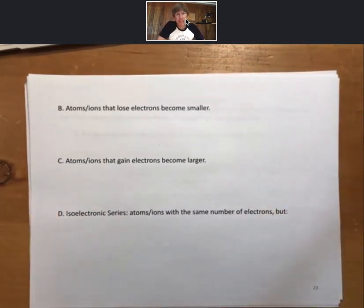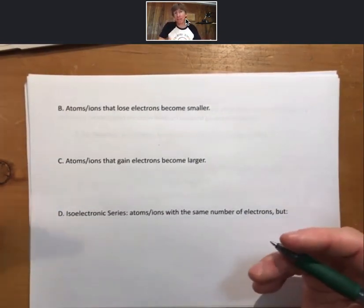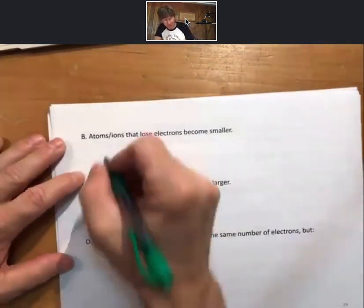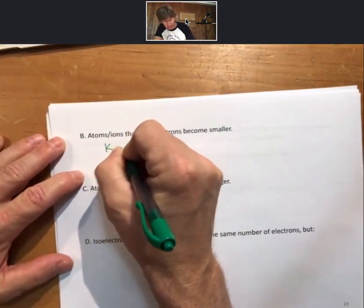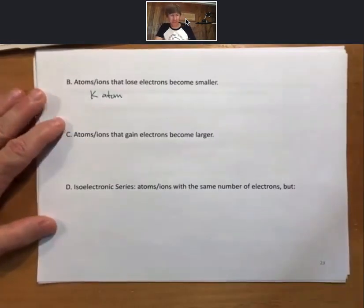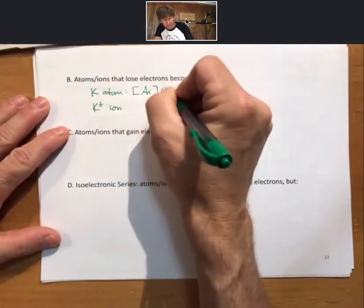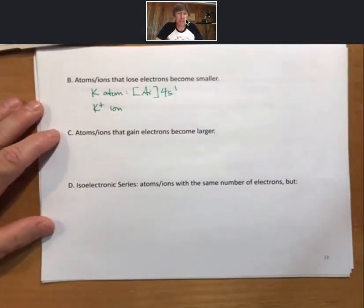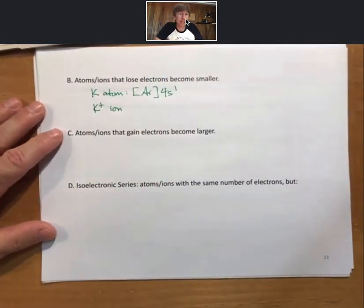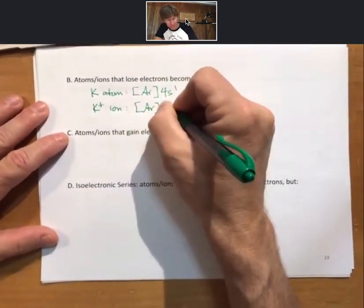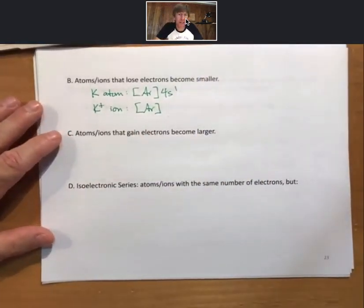Now, atoms or ions that lose electrons become smaller. I think that is generally true. That is true more than generally. However, here's an easy example. If we look at a potassium atom versus a potassium ion, we have argon 4s1, 1 electron in the n equals 4 level. As we go to K plus, we lose that 4s1 electron.